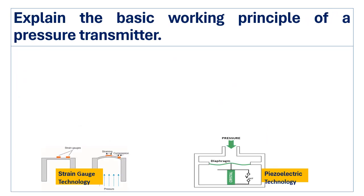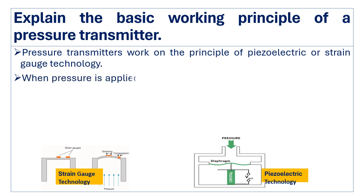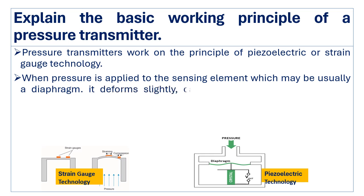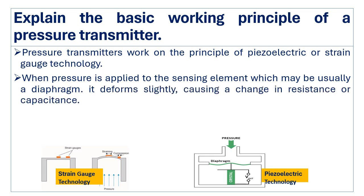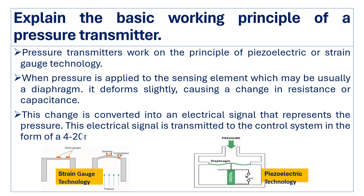Explain the basic working principle of a pressure transmitter. Pressure transmitters work on the principle of the piezoelectric effect or strain gauge technology. When pressure is applied to the sensing element, which is usually a diaphragm, it deforms slightly, causing a change in resistance or capacitance. This change is converted into an electrical signal and transmitted to the control system as a 4 to 20 mA signal.